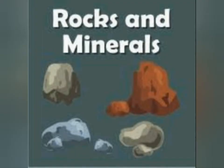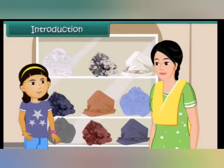The next chapter in your science is rocks and minerals. In this chapter we are going to learn about rocks and minerals. Children, do you know that early man used to produce fire using rocks? Nowadays we are using different things like matchbox and candles, but in earlier days early man used to produce fire through rocks. So there are many types of rocks. The earth is made up of different types of rocks and minerals.